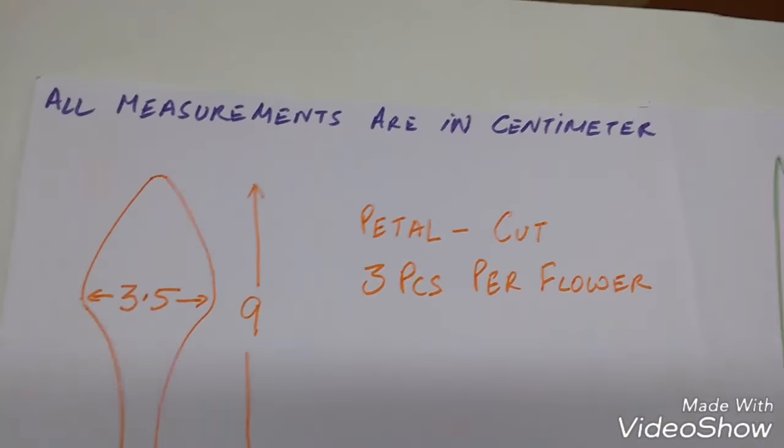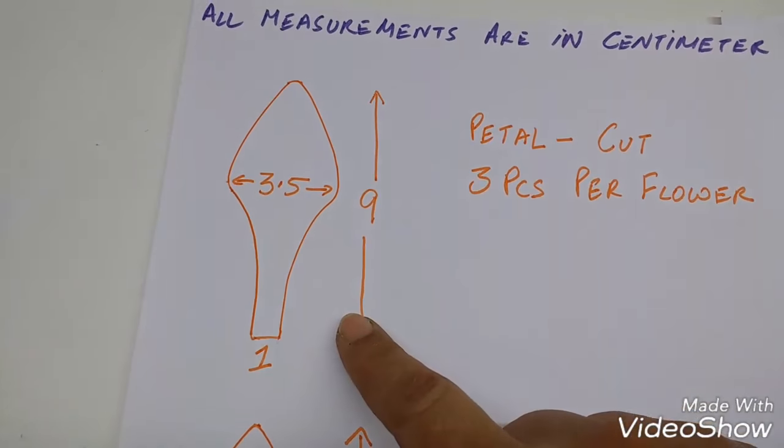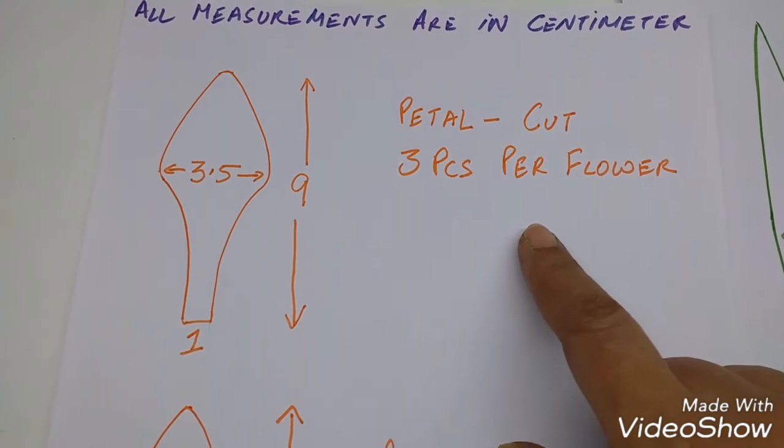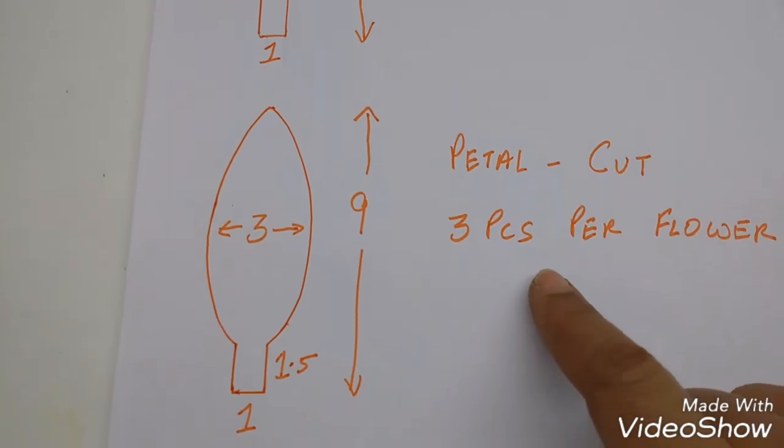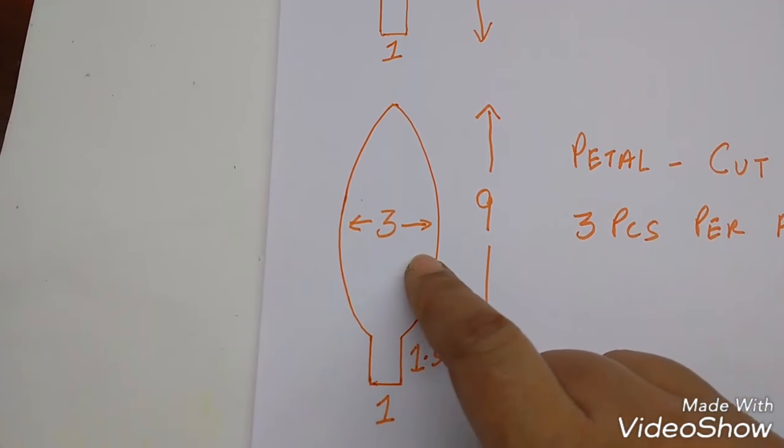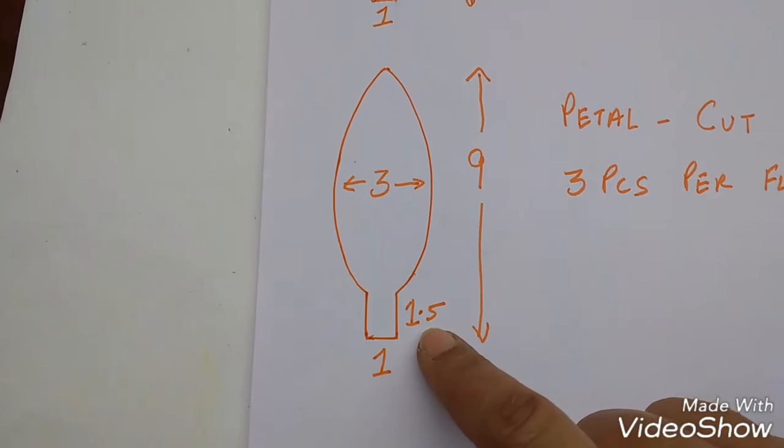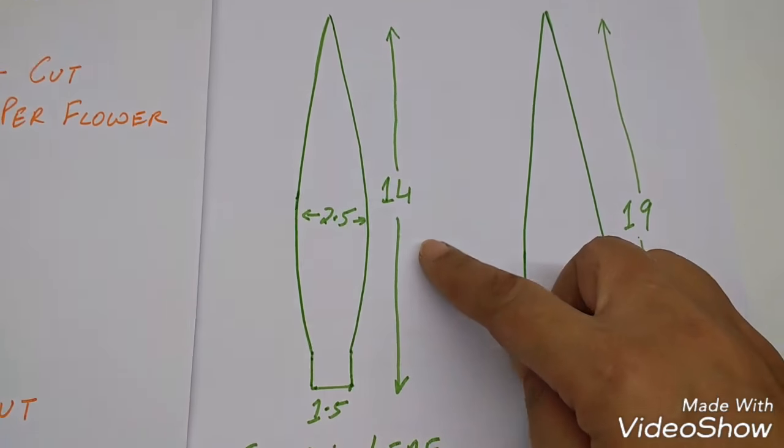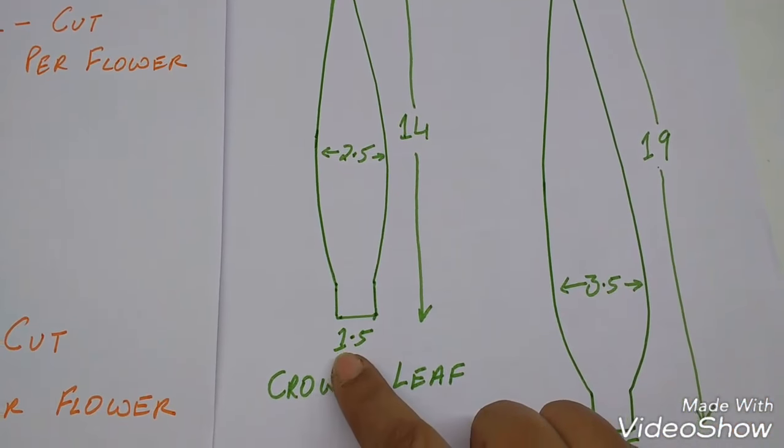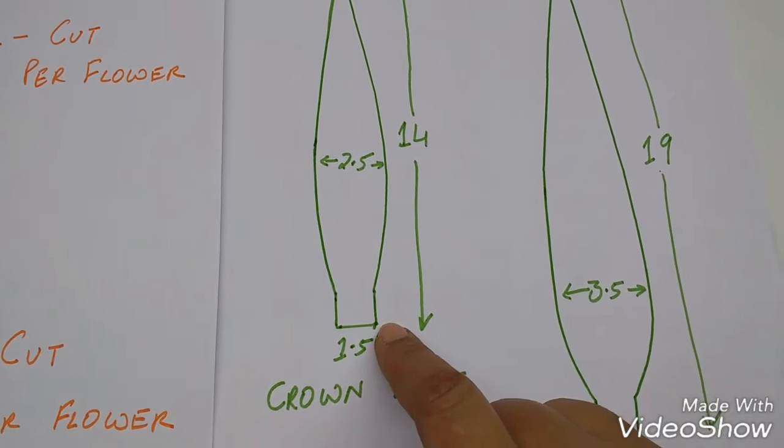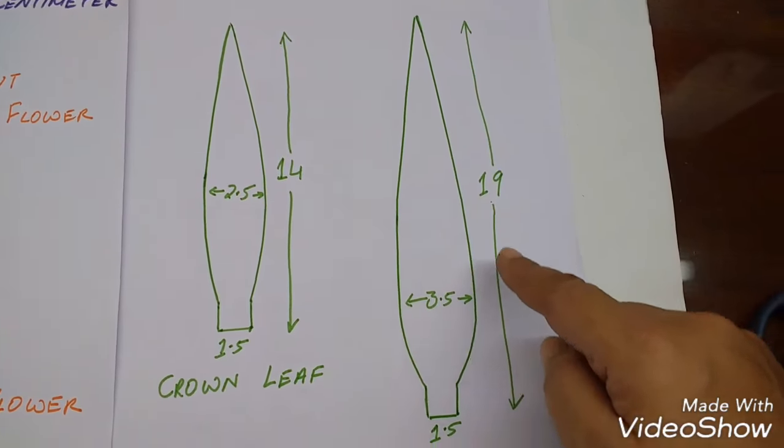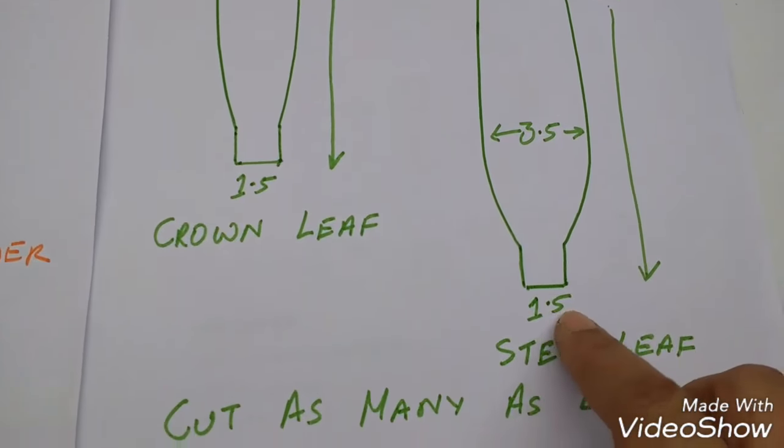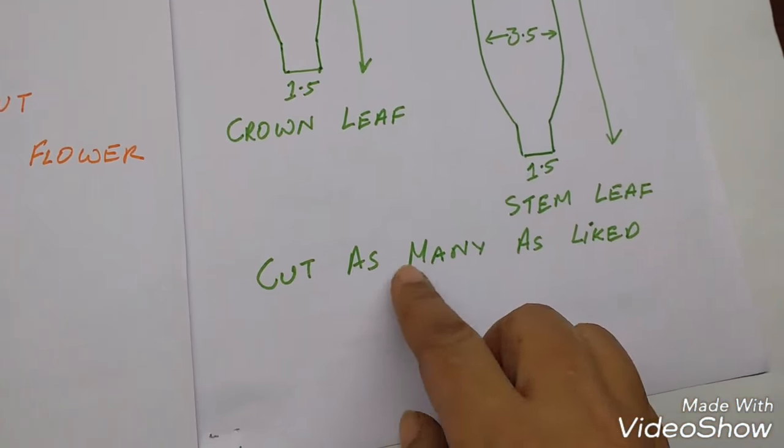Cut the stems according to the measurements given. All the measurements are in centimeter. This is of a petal which is 9 centimeter high and 3.5 centimeter wide here and 1 centimeter at the base. So cut 3 pieces per flower. Then this is of the second petal. This is again 9 centimeter high and 3 centimeter wide in the center. The stem is 1 centimeter wide and 1.5 centimeter high. This is of the crown leaf. This is 14 centimeter high and 2.5 centimeter wide. The stem is 1.5 centimeter wide and 1 centimeter long. This is of a stem leaf. This is 19 centimeter high and 3.5 centimeter wide at the base. And the stem is 1.5 centimeter wide by 1 centimeter. Cut as many of these leaves that you want.